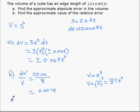If we want to express that as a percent error, we simply multiply that by 100, which gives us 0.75%. So it is a relatively small error, less than 1%.